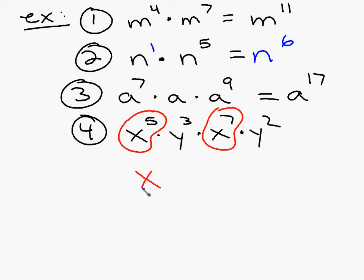So that will become x to the twelfth times y to the fifth. You leave it like that. That's all we can do. There's nothing else I can do because those are not like terms.